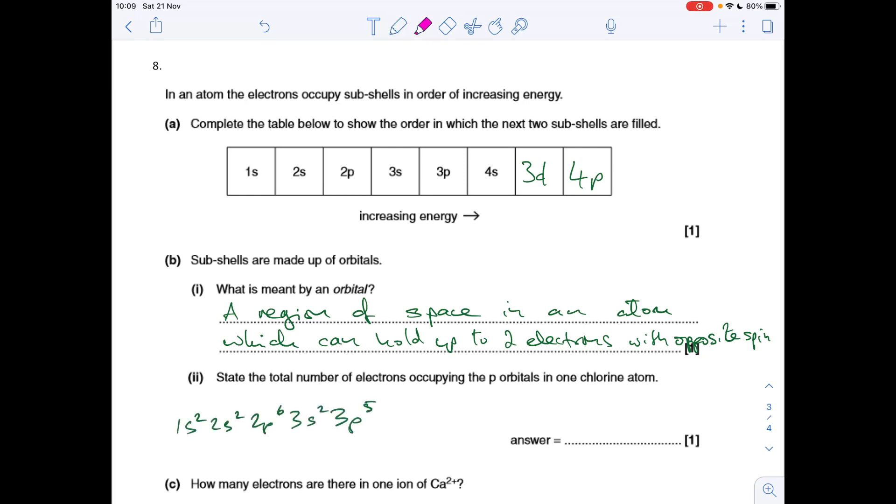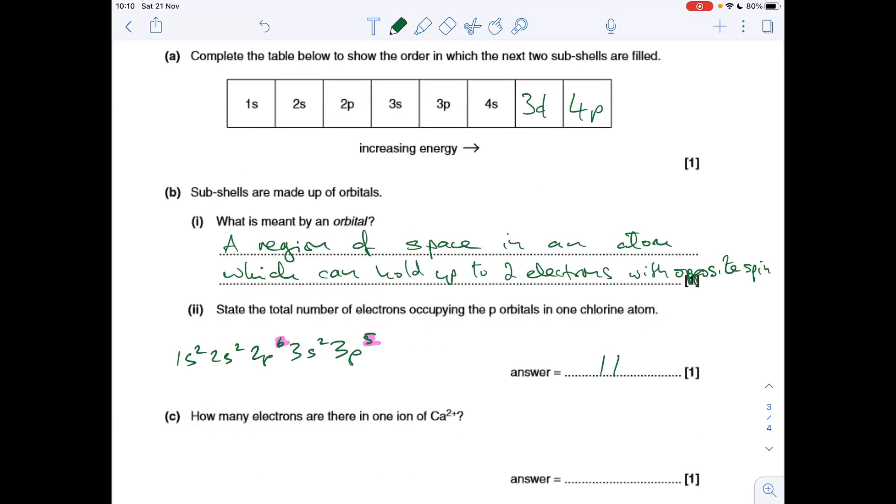Next part: the total number of electrons occupying the p orbitals of chlorine atom. There's the electron configuration there, so we've got p6 and p5, so it's 11. How many electrons are in one ion of calcium 2+? Calcium the atom has got 20 electrons, so the 2+ ion is going to have 18—it's lost two electrons.